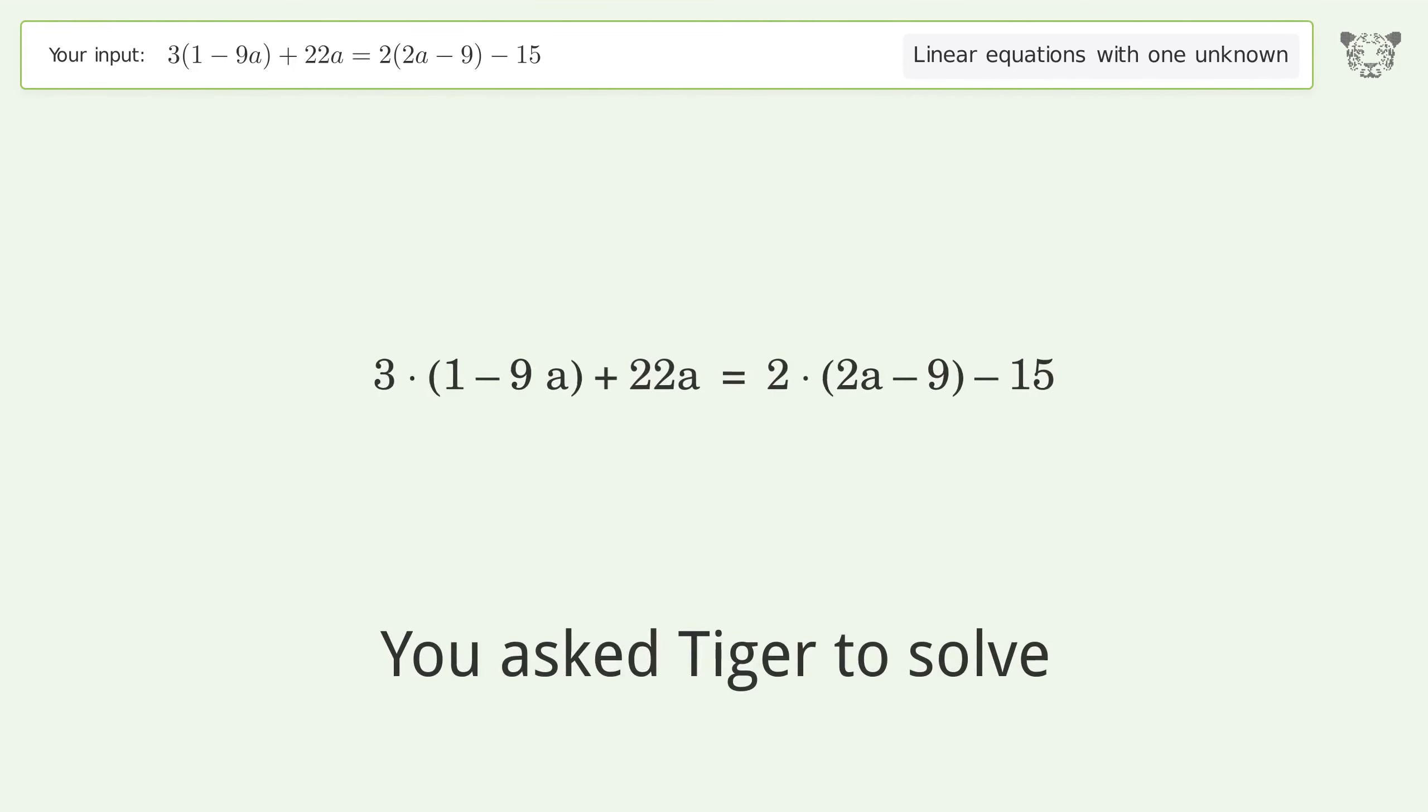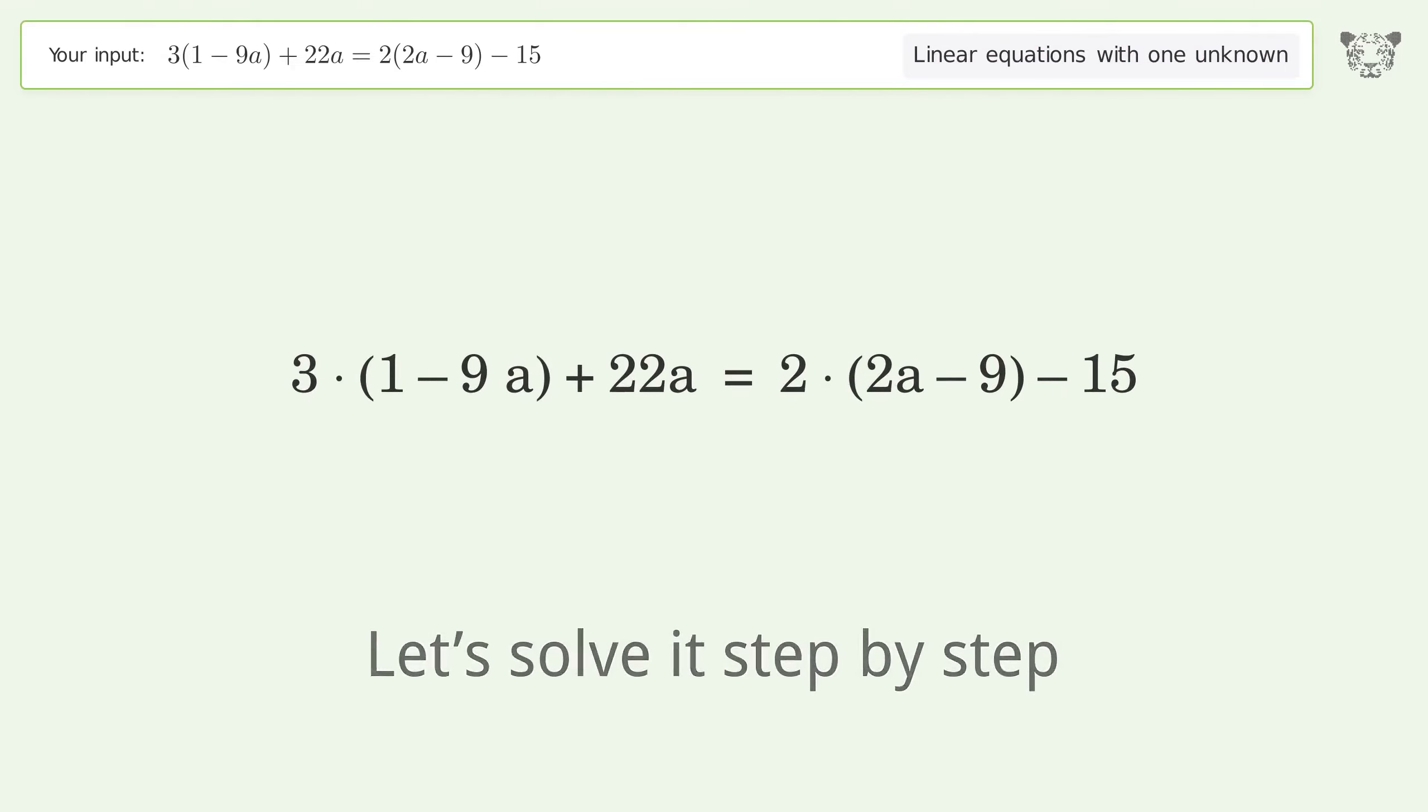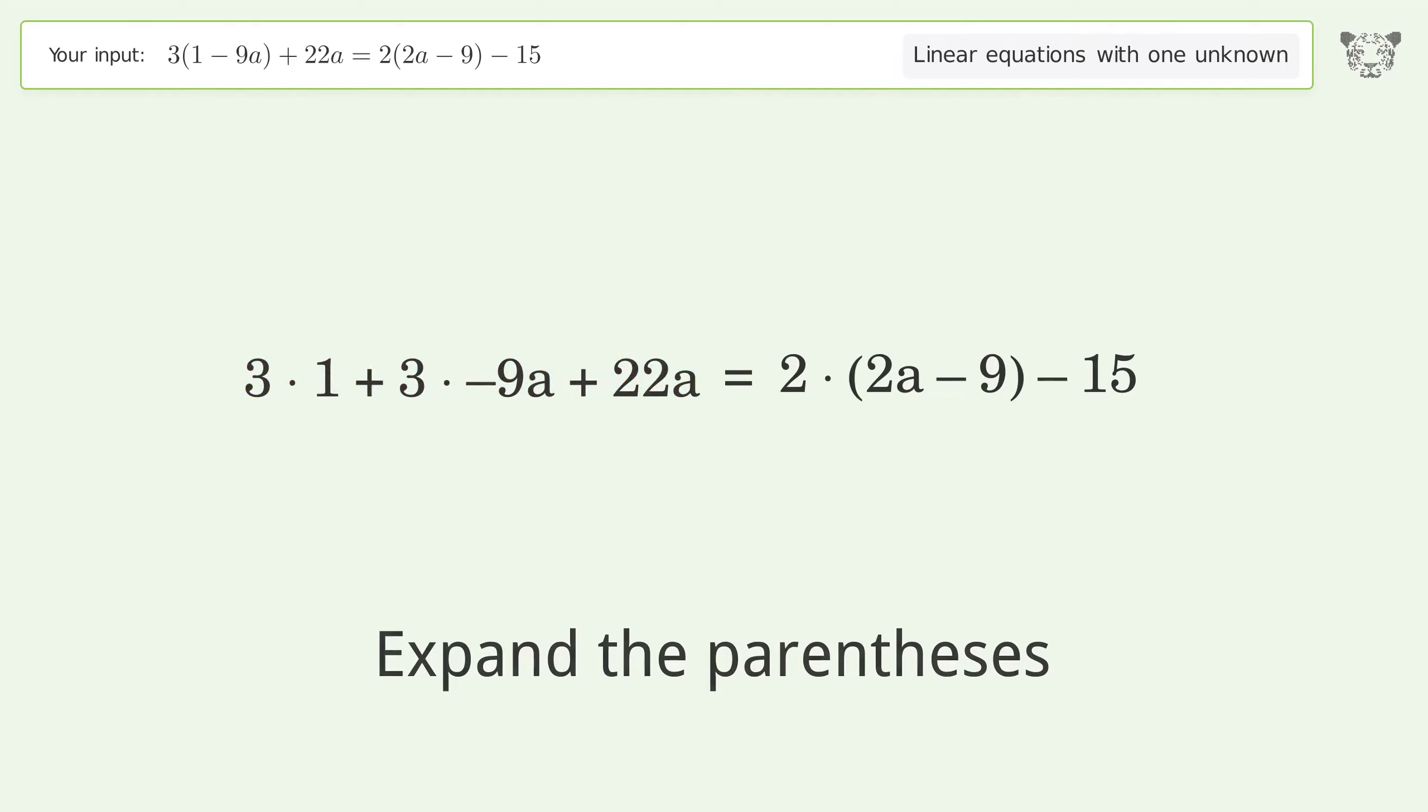You asked Tiger to solve this. This deals with linear equations with one unknown. The final result is a equals 4. Let's solve it step by step. Simplify the expression, expand the parentheses, simplify the arithmetic, multiply the coefficients.